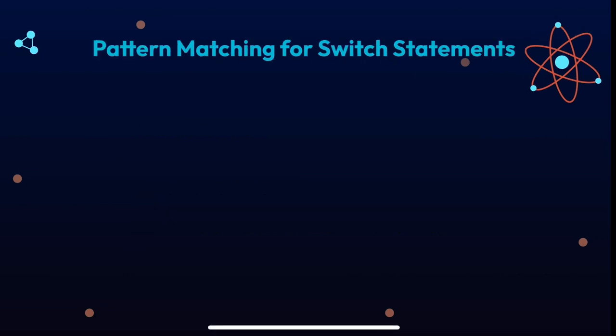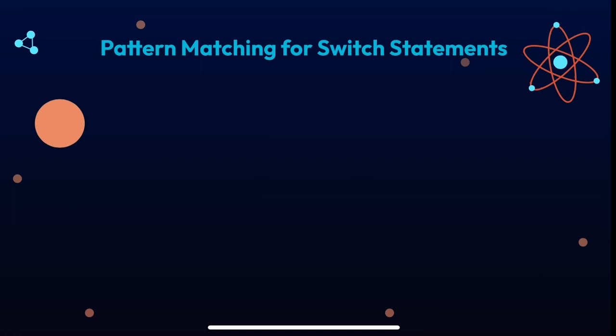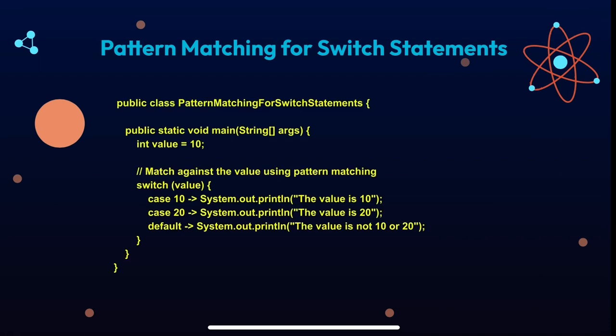The third one is pattern matching for switch statements. Pattern matching for switch is a new feature that allows you to match against a value using the same syntax as a record pattern. This can make your code more concise and readable. Here is an example where we are matching against a value pattern.